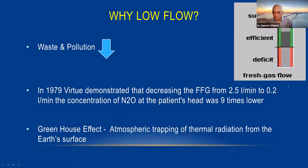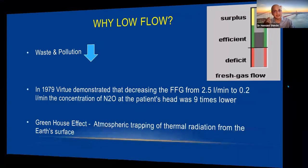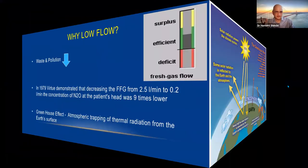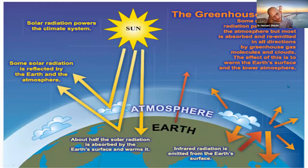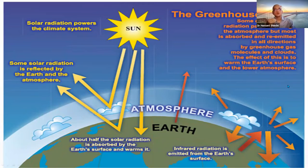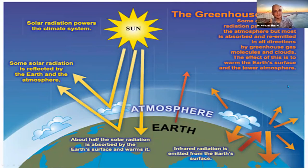All inhalation agents — nitrous oxide, desflurane, sevoflurane, halothane — are greenhouse gases. The greenhouse effect occurs because these gases cause rarefication of the atmosphere, allowing more solar radiation to reach the earth and contributing to global warming. If we use less of these drugs, we reduce the greenhouse effect. Our industry — anesthesiology — contributes only one percent of total greenhouse gas emissions.